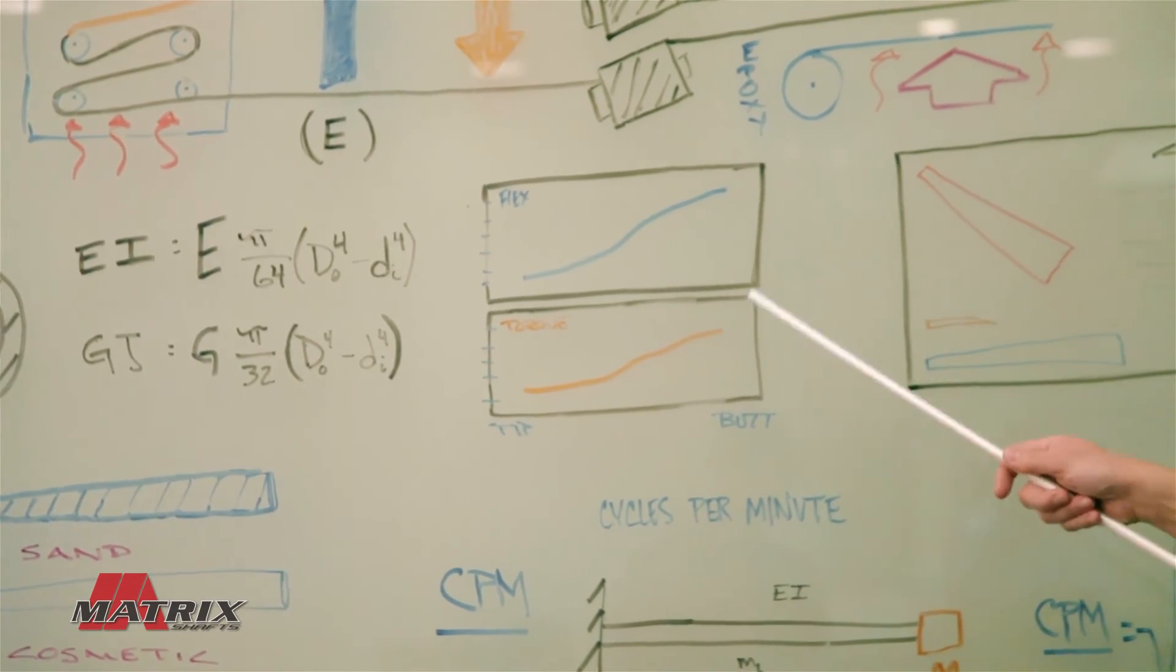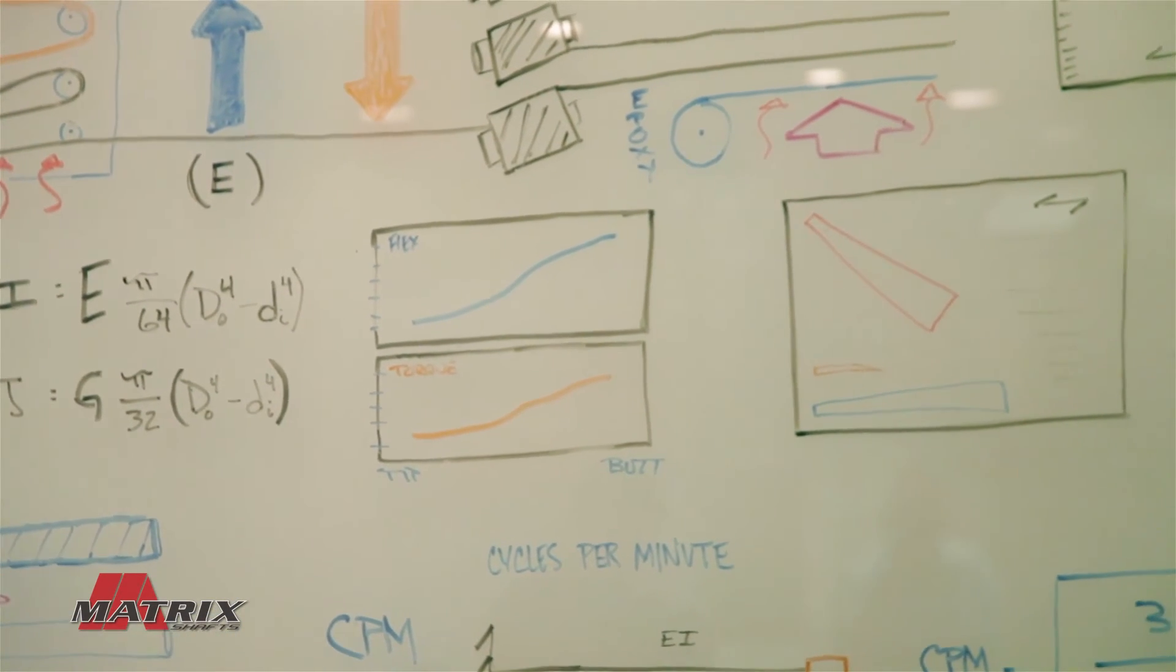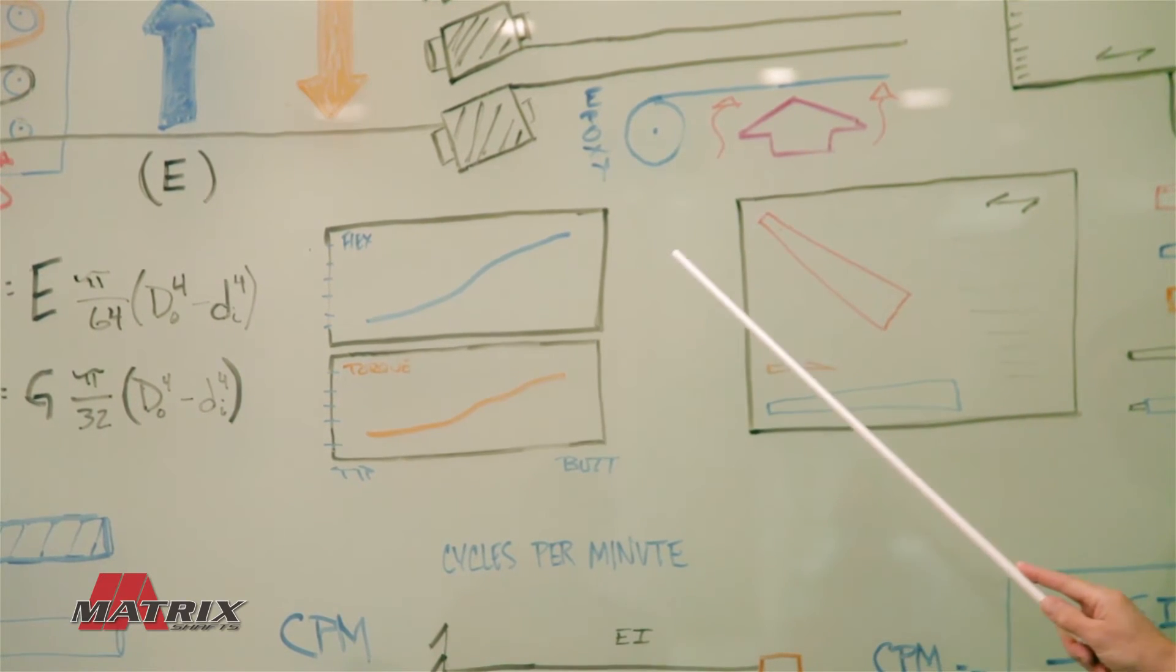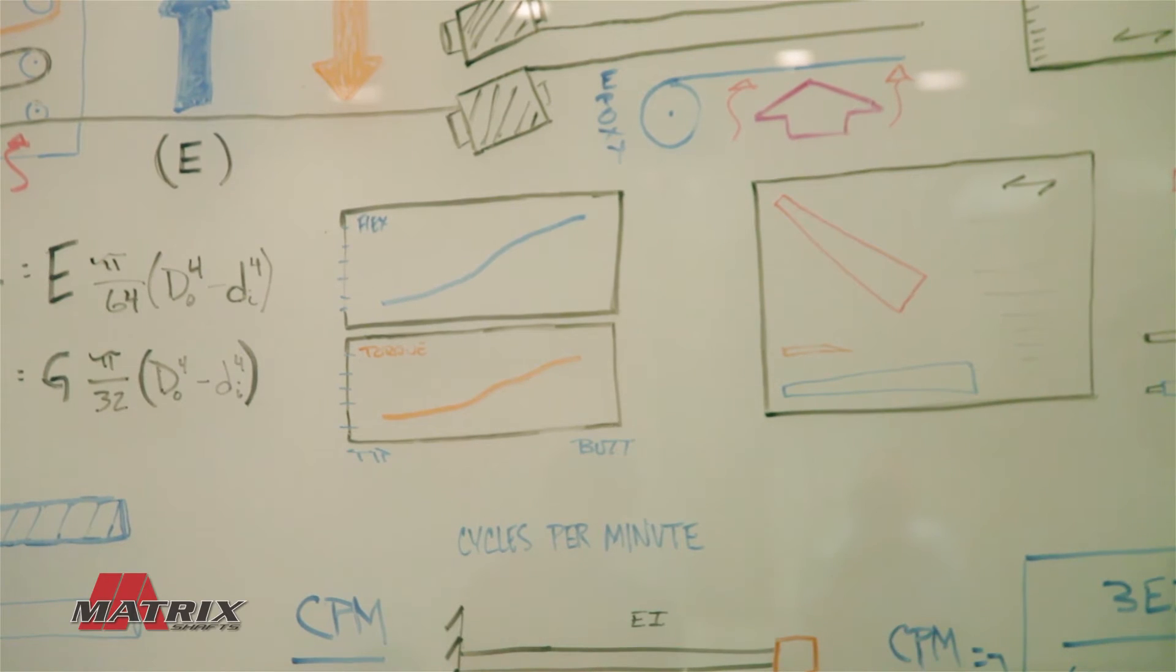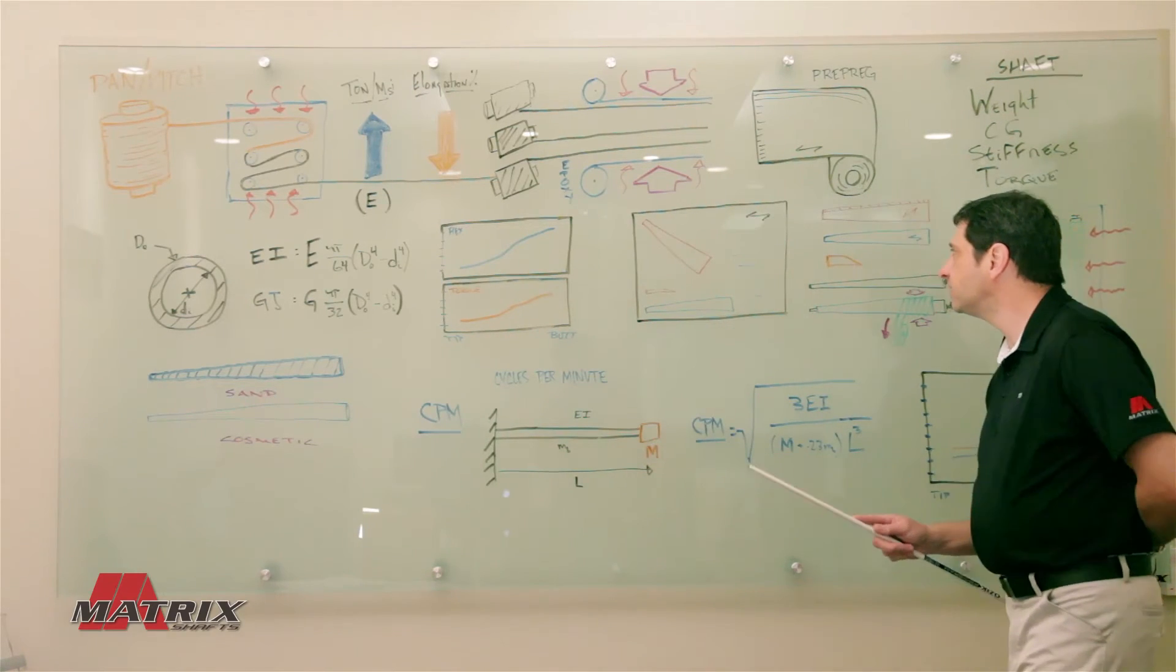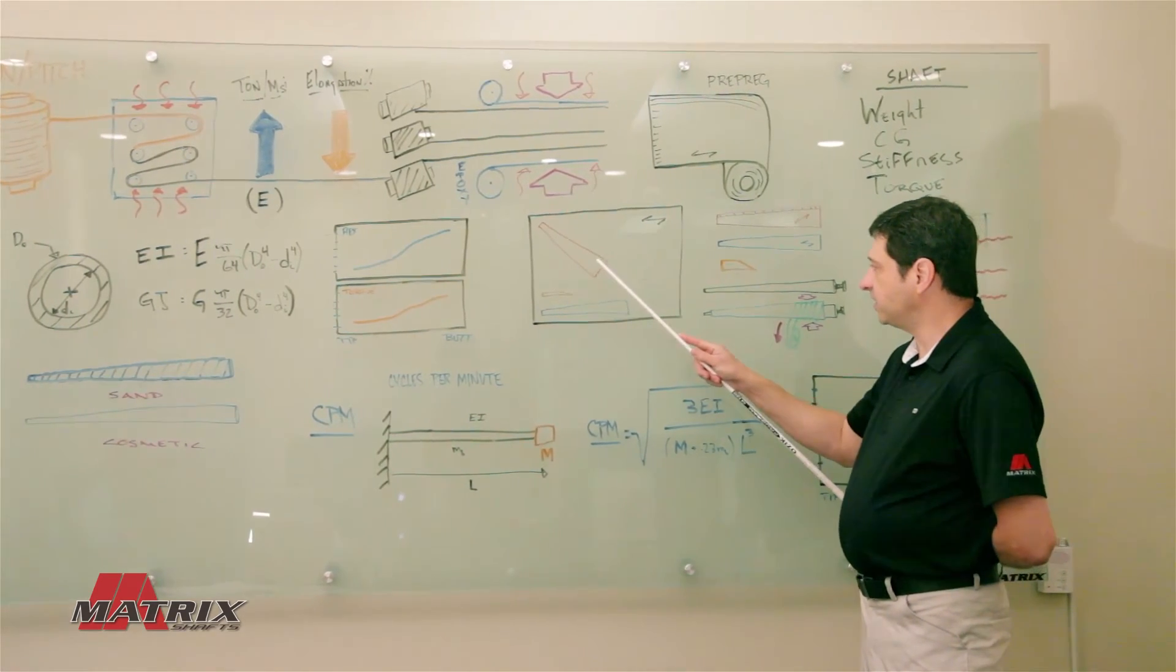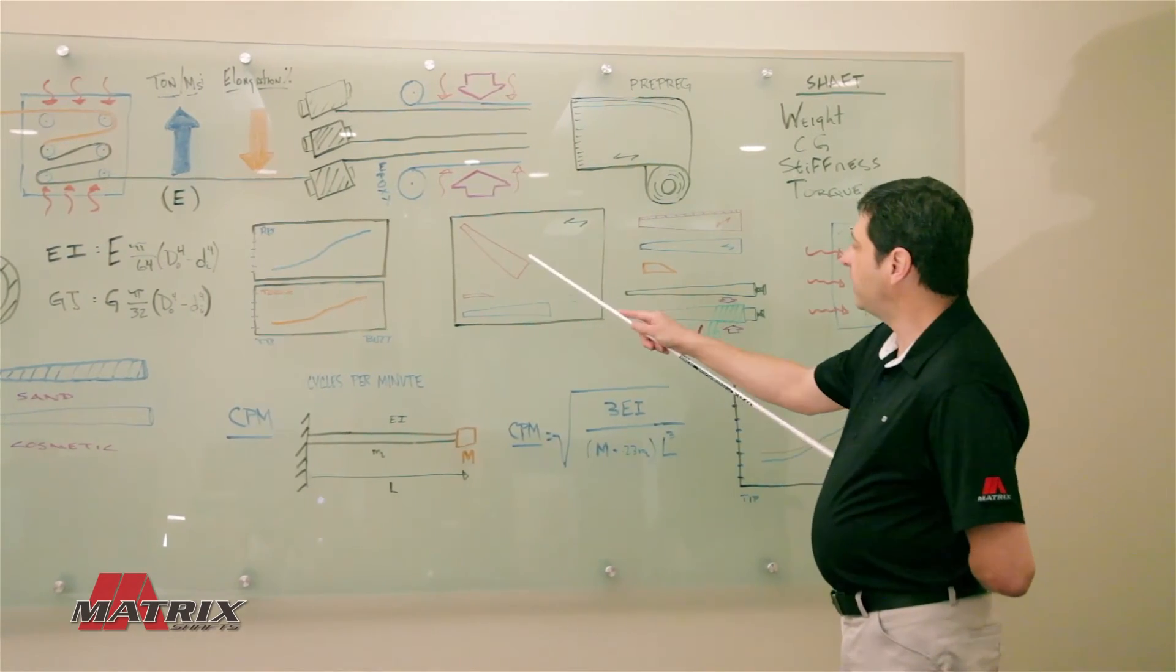If you look at these two graphs here, which show the stiffness profile and the torque profile, you see that they will pretty much follow along a geometry change in the shaft from butt to tip. Once you have your design done, you take the prepreg that we made and start cutting out the individual plies or flags to make the shaft.